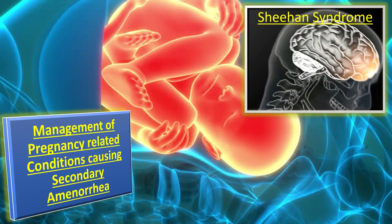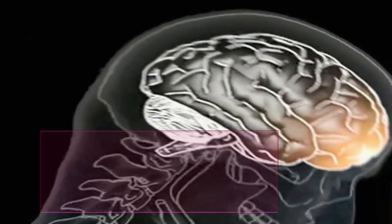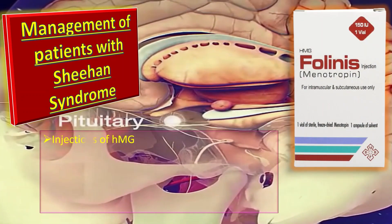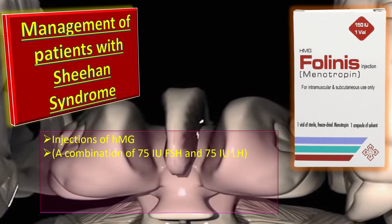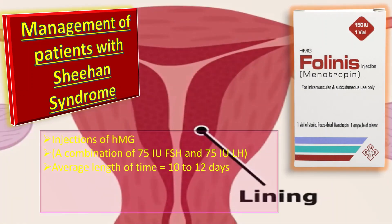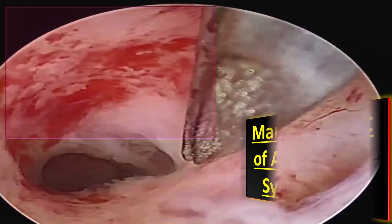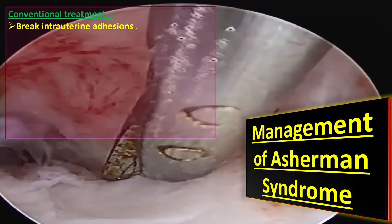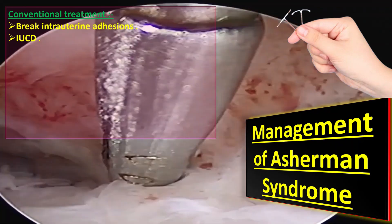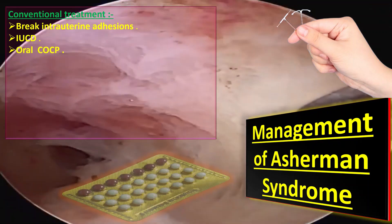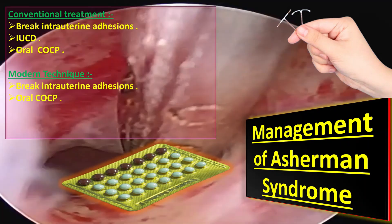Let us discuss the management of pregnancy-related conditions, which include Sheehan syndrome and Asherman syndrome. For Sheehan syndrome, these women undergo successful ovulation with daily injection of HMG, which is a combination of 75 international units FSH and 75 international units LH, for an average period of about 10 to 12 days, which directly stimulates folliculogenesis to create mature follicles and oocytes. For Asherman syndrome, the conventional treatment is to break down the intrauterine adhesions with a uterine sound, followed by insertion of an intrauterine contraceptive device to prevent further adhesion formation. Menstruation is restored with oral contraceptive pills. The modern technique is to break down intrauterine adhesions with cautery under direct vision through hysteroscopy.